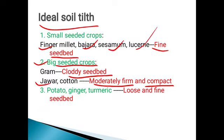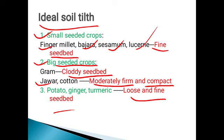Crops like potato, ginger, and turmeric are grown by plant parts — tubers, rhizomes, and so on — and these also require a loose and fine seedbed. So for small seeded crops and underground crops like potato, ginger, and turmeric, we require a fine seedbed. For bigger seeds, a cloddy seedbed is acceptable, and for medium-sized seeds, a moderately compact seedbed is needed.